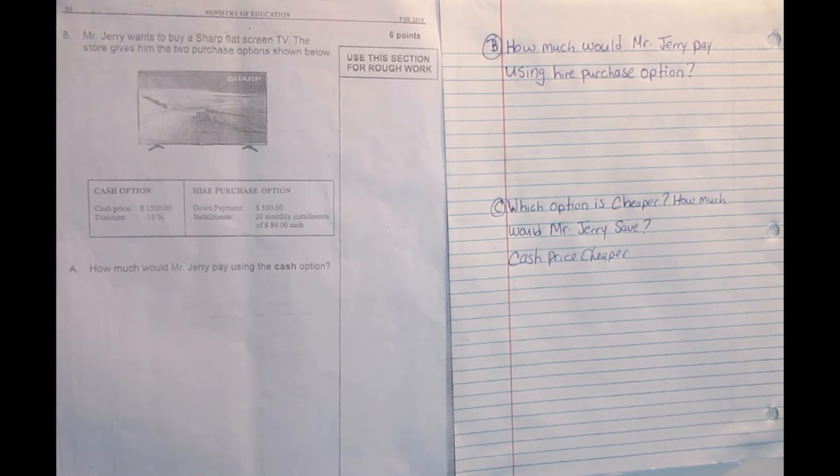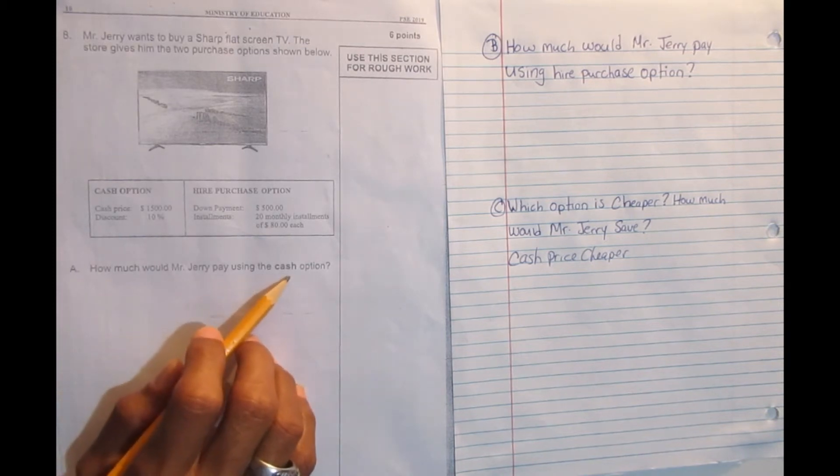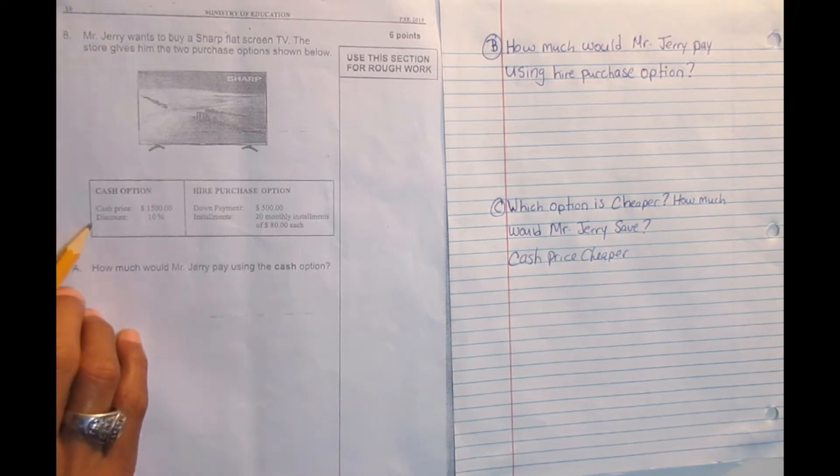Remember the TV cost $1,500 but if the person buy it cash, they get 10% discount. And A says, how much would Mr. Jerry pay using the cash option?